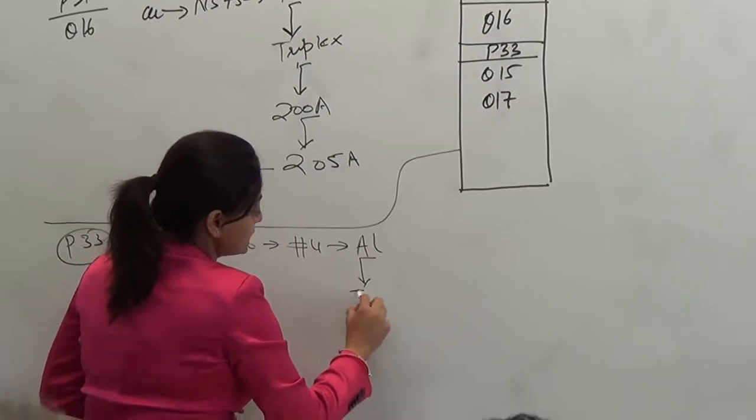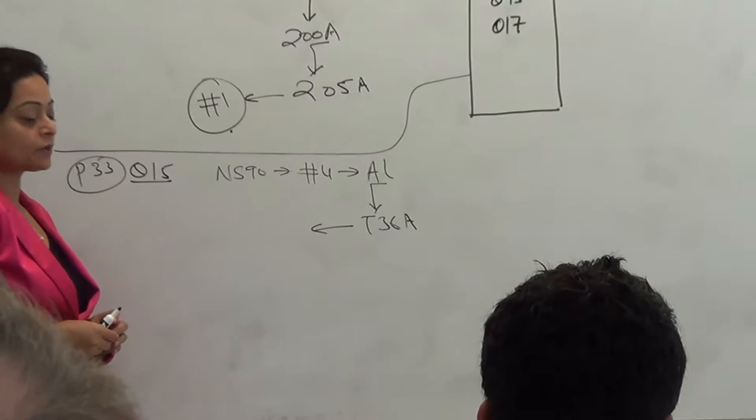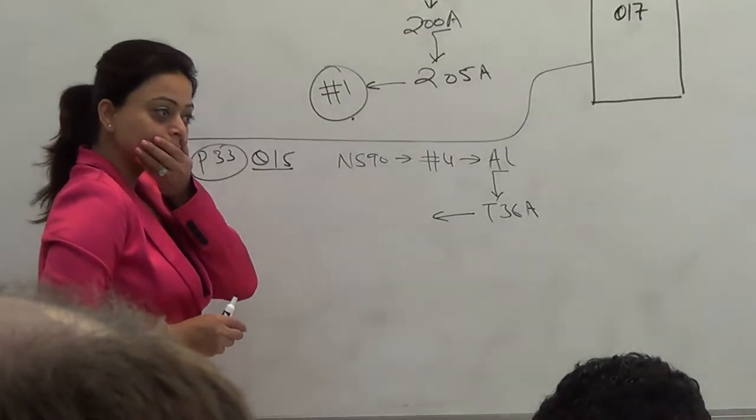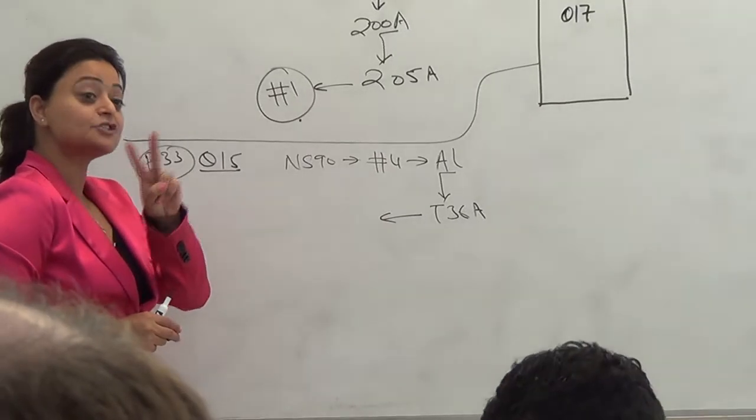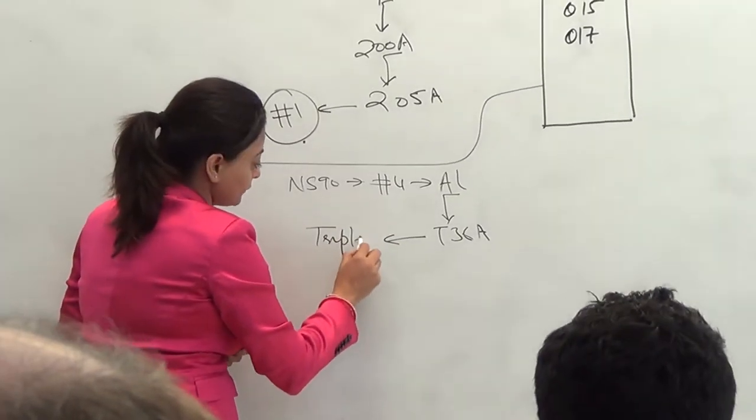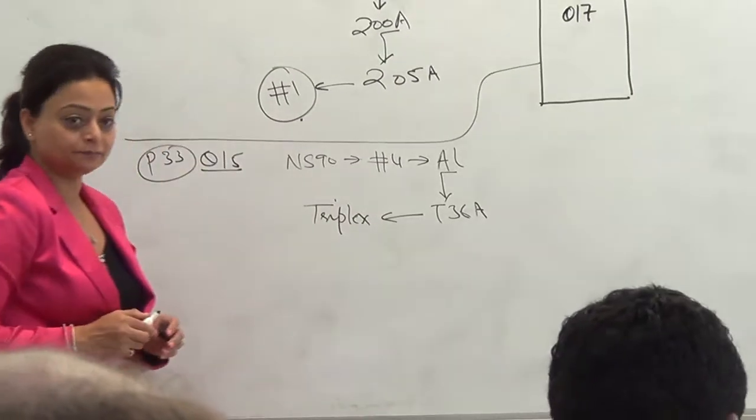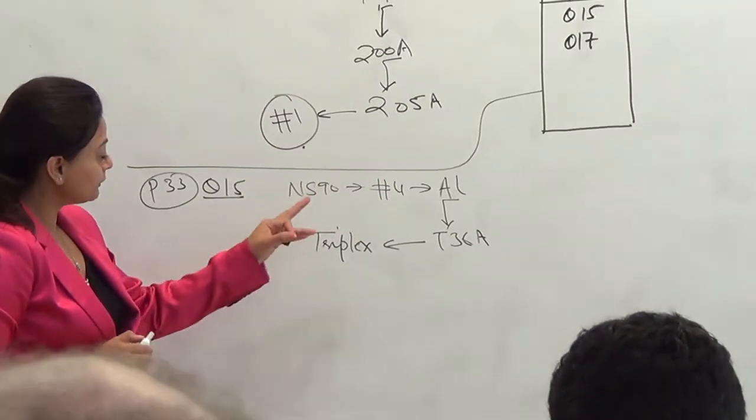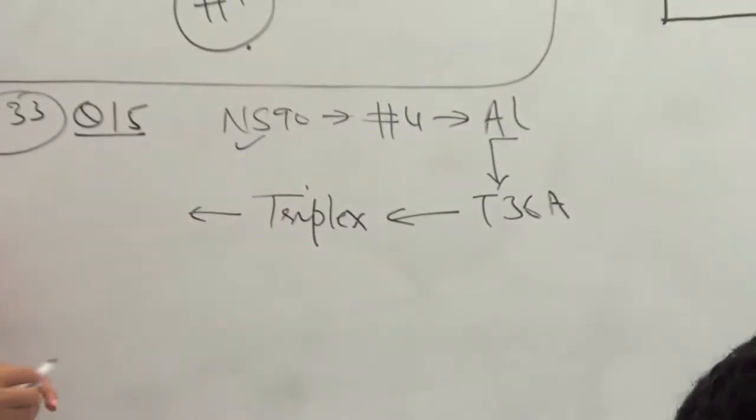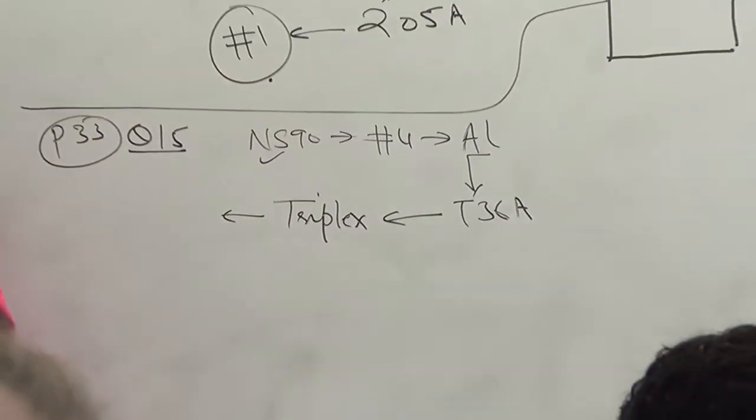So, we are going to follow table 36A. So, it's duplex, triplex, or quadruplex? It's storing two conductors. Two insulated conductors? Two lines plus neutral. So, it's triplex. Two insulated means two lines. So, number 4 NS90, you already gave me NS90. All you're going to tell me is the conductor intensity.